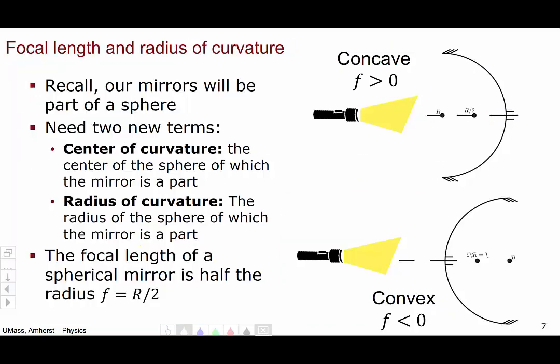Now, let's talk a little bit about focal length and the radius of curvature. Remember that all the mirrors we will be talking about here are parts of a sphere. We need two new terms. We need the center of curvature, which represents the center of the sphere of which the mirror is a part, and the radius of curvature.